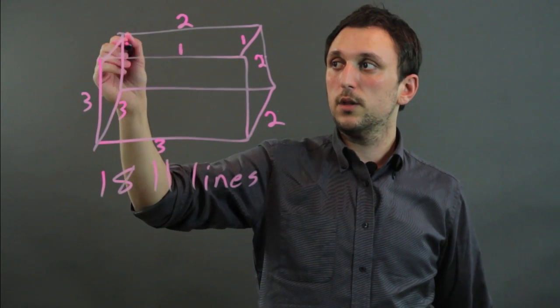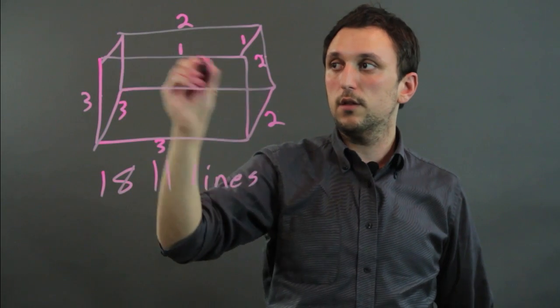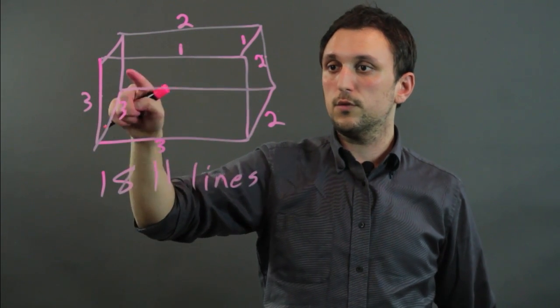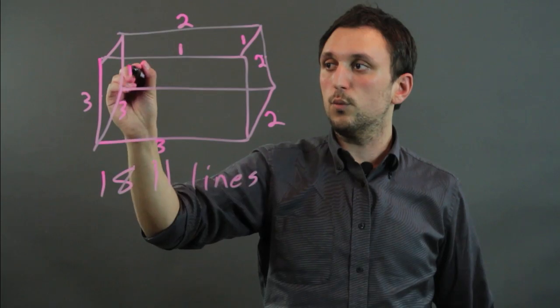And then we go over here, and this one's been done, this one's been done, and this one's been done, so there's nothing. For here, this one's been done, and this one's been done, but this one hasn't, so this is 1.